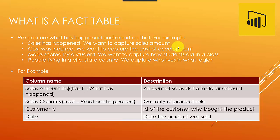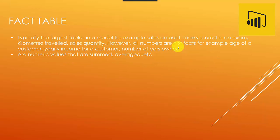Now typically a fact table would be the largest table in a model. For example, if you're looking at a sales table for an e-commerce company, it could be billions of rows - that's a lot of data. Maybe you want to capture in a school the marks scored by students.